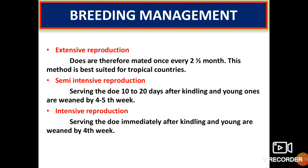Breeding management depends on the reproductive cycle. In extensive reproduction, does are allowed to take care of their young ones up to weaning age of 4 to 5 weeks, after which they are rebred — does are mated once every two months. This method is best suited for tropical countries. In semi-intensive reproduction, the doe is served 10 to 20 days after kindling and young ones are weaned by the 4th to 5th week.